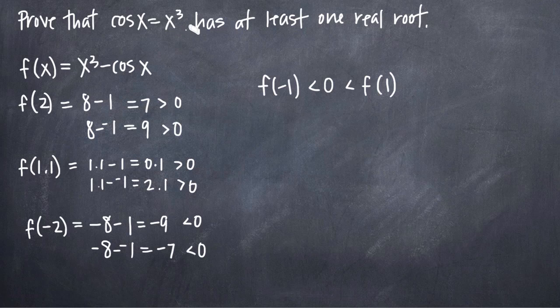We know that x cubed is a continuous function, and we know that cosine of x is a continuous function, which means that cosine of x equals x cubed is also a continuous function, so we don't have to worry about any continuity issues either. And that's how we prove that this equation has at least one real root in its domain.